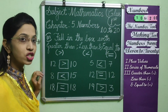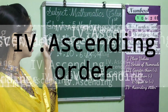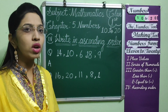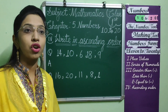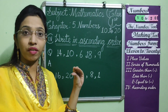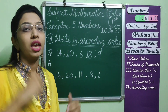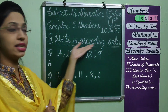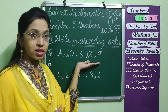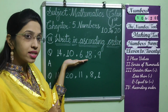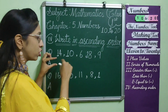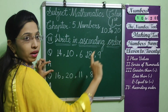Have you understood, children? The 4th topic is writing in ascending order. Ascending order means ordering of numbers from smallest to greatest. We have to arrange numbers small to big.